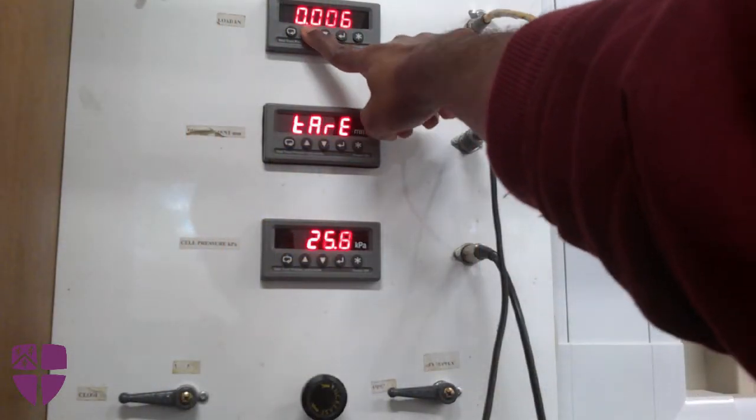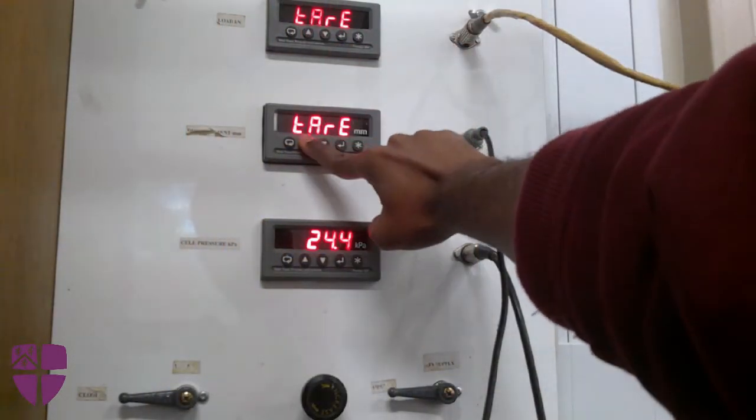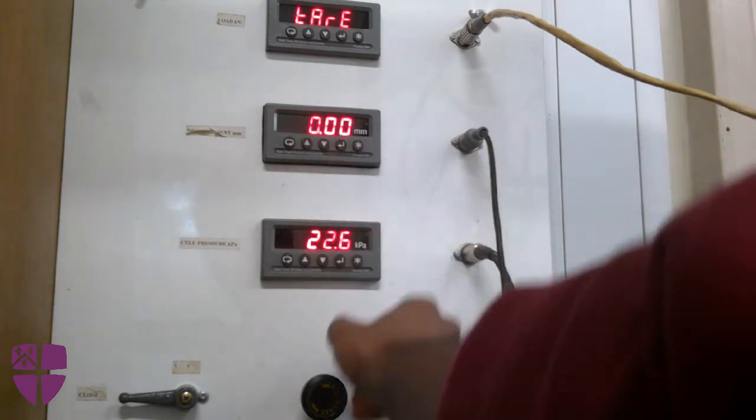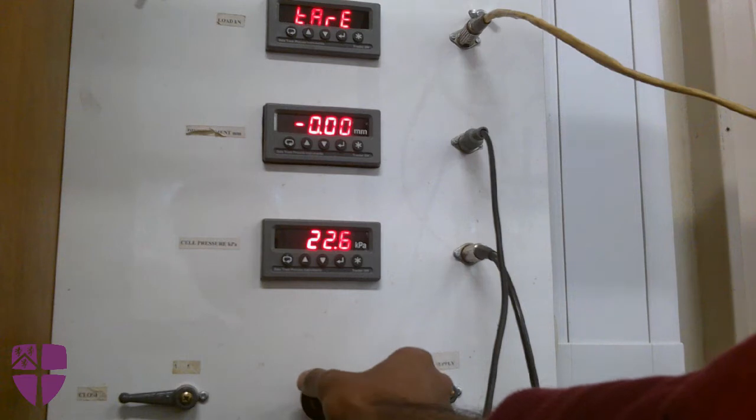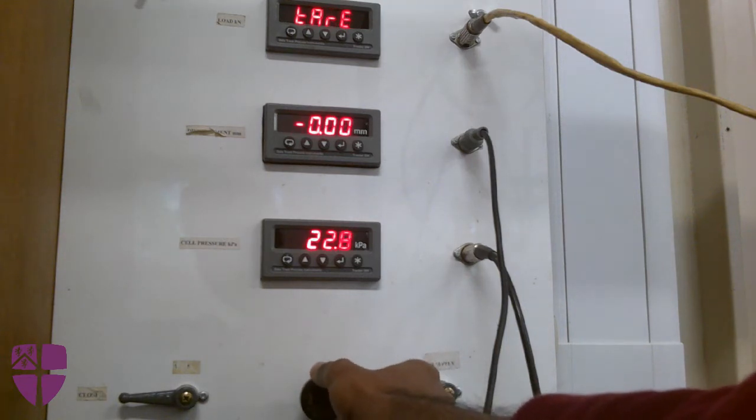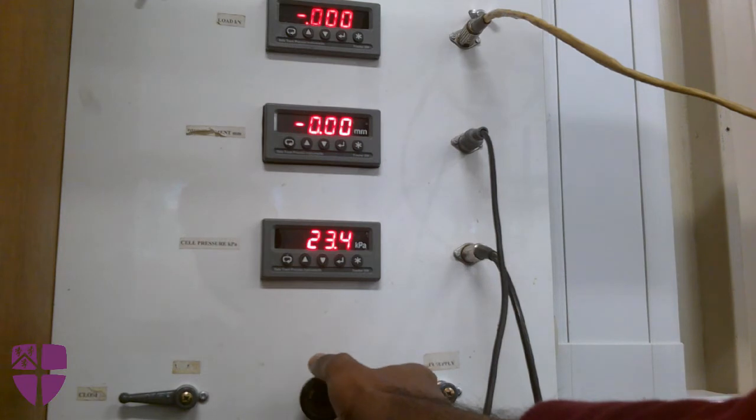Now the sample is ready to be sheared. Set the initial readings of the load and displacement readings as zero by pressing the tare button on the controllers. To set the cell pressure, slowly rotate the pressure knob until the required pressure is set. Here the cell pressure is set to 50 kilopascals.